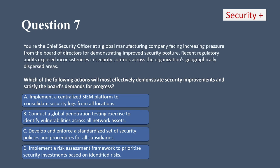Question seven. You're the chief security officer at a global manufacturing company facing increasing pressure from the board of directors for demonstrating improved security posture. Recent regulatory audits expose inconsistencies in security controls across the organization's geographically dispersed areas. Which of the following actions will most effectively demonstrate security improvements and satisfy the board's demands for progress? A, implement a centralized SIEM platform to consolidate security logs from all locations; B, conduct a global penetration testing exercise to identify vulnerabilities across all network assets; C, develop and enforce a standardized set of security policies and procedures for all subsidiaries; or D, implement a risk assessment framework to prioritize security investments based on identified risks.